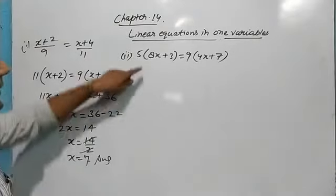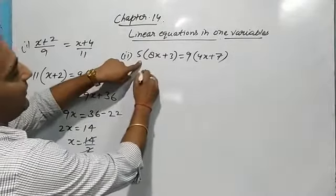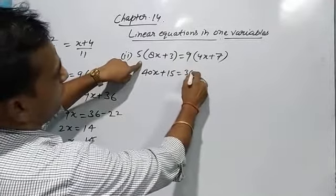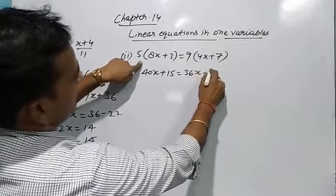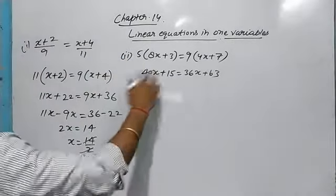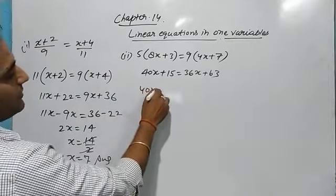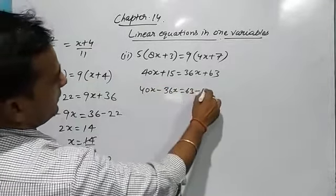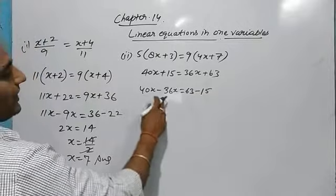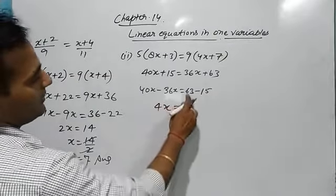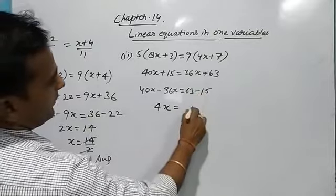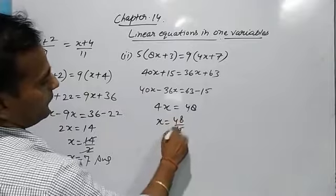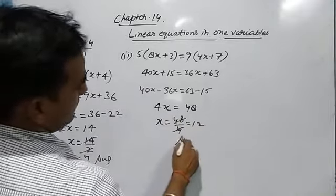All questions are from my books. Next question: 5(8x + 3) = 9(4x + 7). Expanding: 40x + 15 = 36x + 63. So 40x − 36x = 63 − 15, giving 4x = 48, so x = 48/4 = 12.